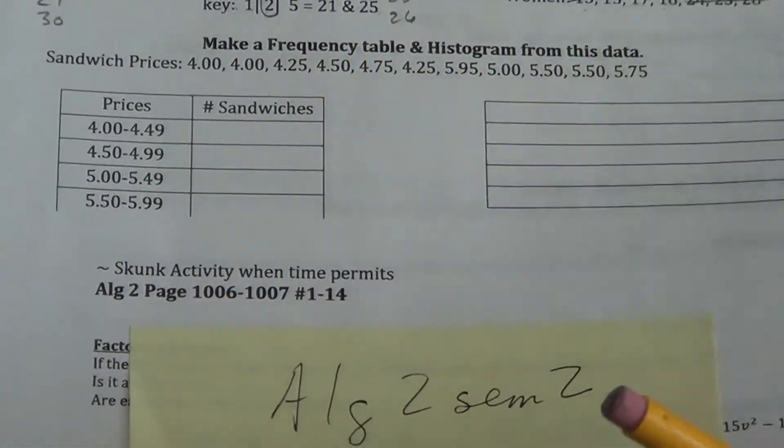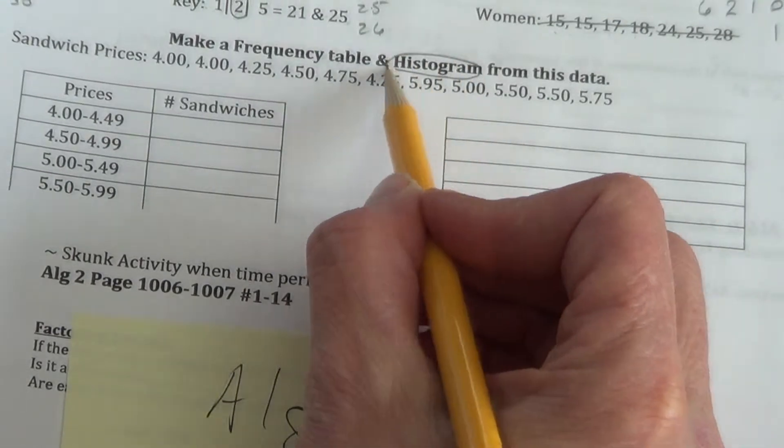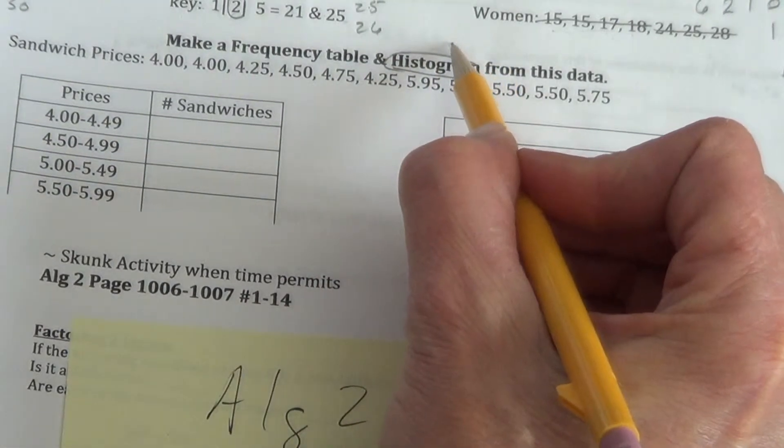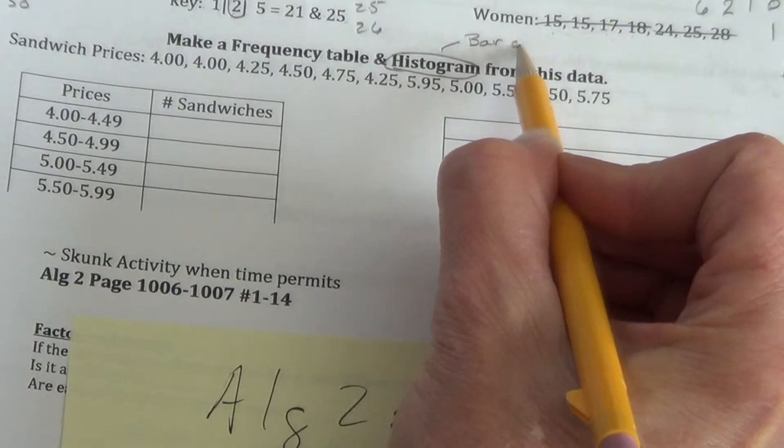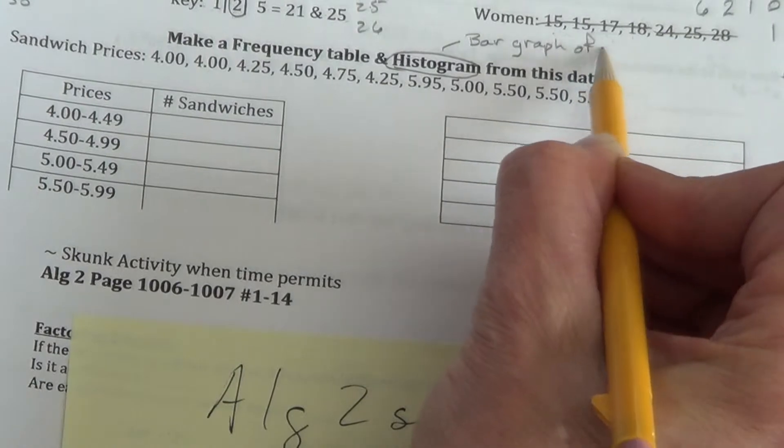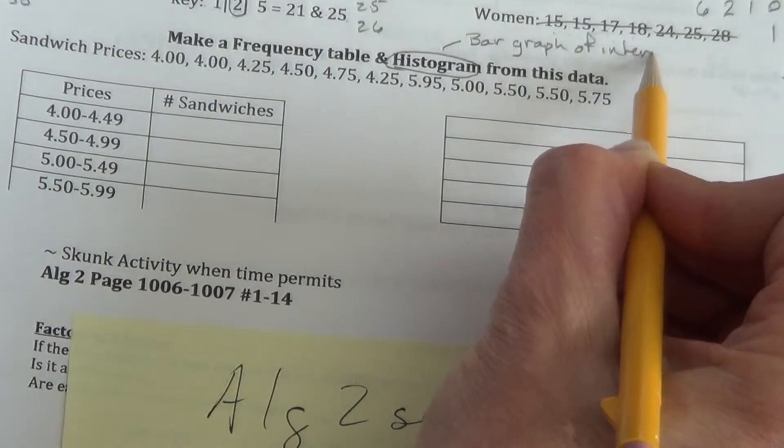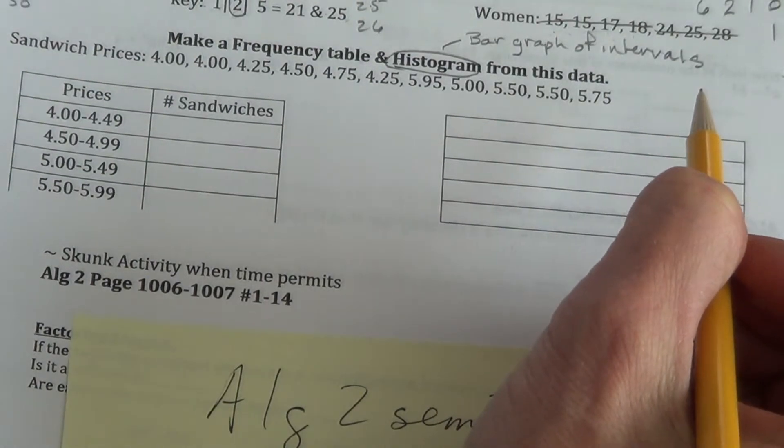Okay, now we're down to frequency tables and making a histogram. Histogram is just like a bar graph, but it's connected. It's a bar graph of intervals, is what I like to think of it as. Bar graph of intervals. So there's no space between the bars.